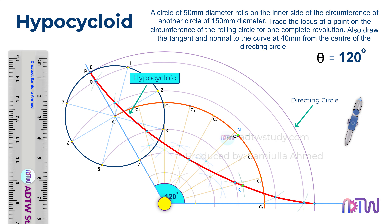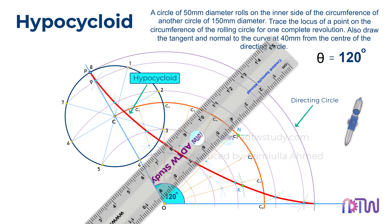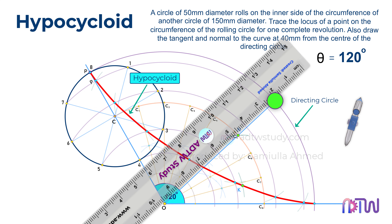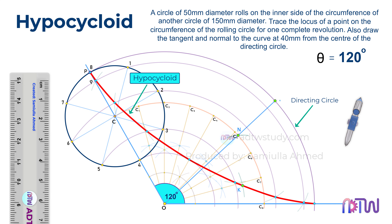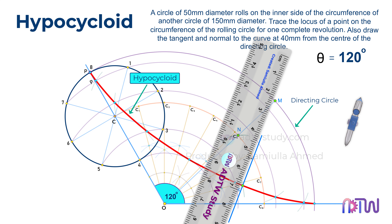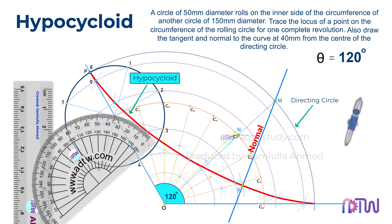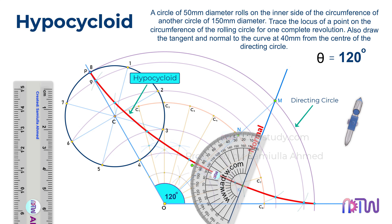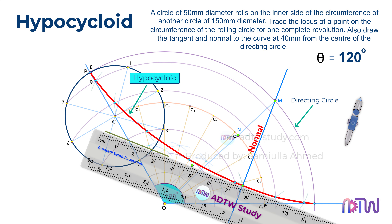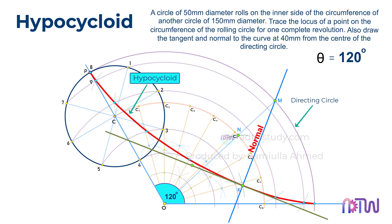Next, using center point O and N, draw a line up to the circumference of the directing circle. This point will be our point M. After this, from point M draw a line joining to point K. This line will be our normal line. In the end, using a protractor, draw a line perpendicular to this normal line at point K. Therefore, this is our tangent line.